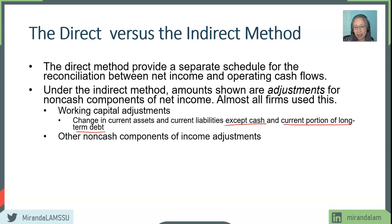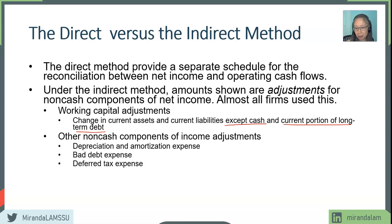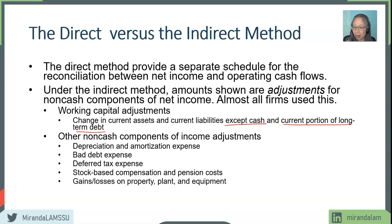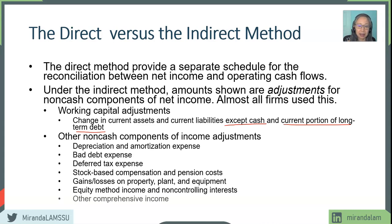The other non-cash components of income include non-cash expenses such as depreciation and amortization, bad debt expenses, deferred tax expenses — all of these are non-cash accruals. Stock-based compensation and pension costs are also non-cash. Gain and loss on property, plant, and equipment will be channeled through investing activity. Finally, equity method income and non-controlling interest are also non-cash components. We also exclude any non-operating activities such as other comprehensive income, which is not part of regular operations.